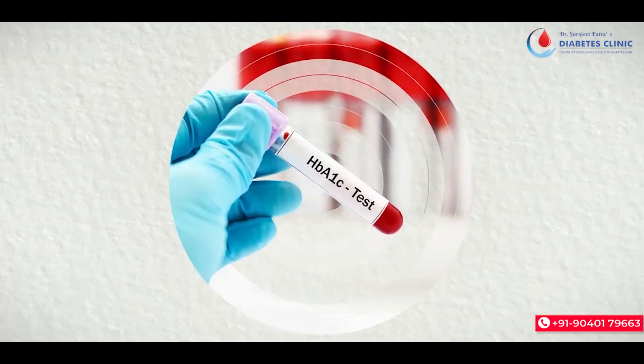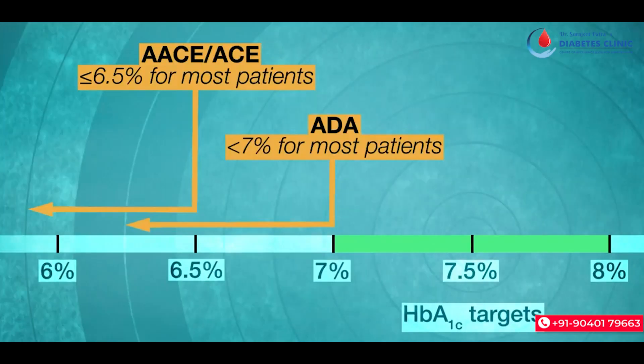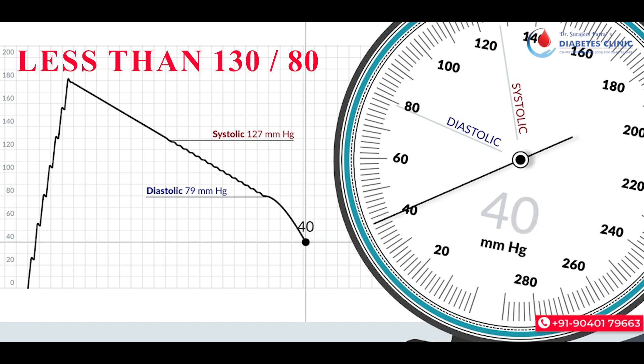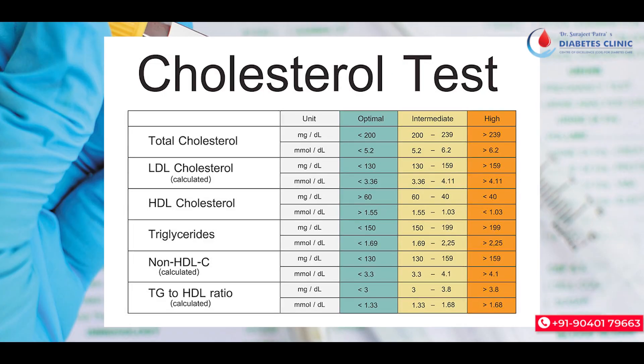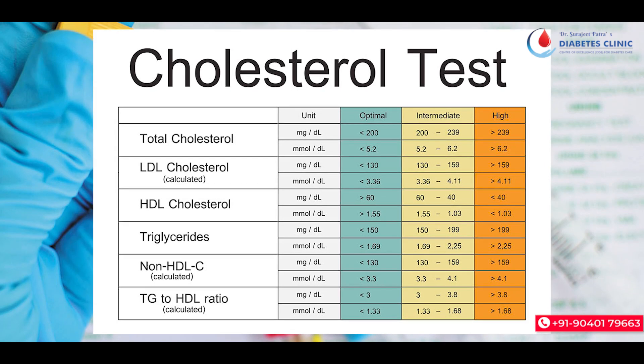The goals of diabetes control are A, B, C: A means HbA1c — good control means HbA1c less than 7. B means blood pressure — good control means 130 by 80. C means cholesterol — LDL cholesterol less than 70, and triglyceride less than 150.